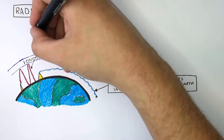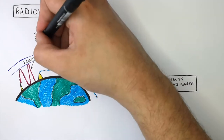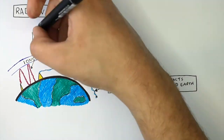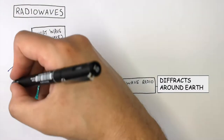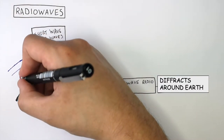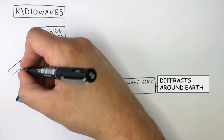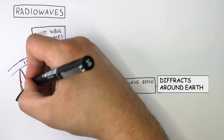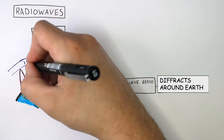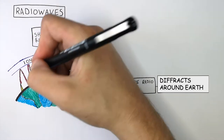So remember: short wave radio waves are reflected between the Earth and the ionosphere. That is how they are transmitted around the world.